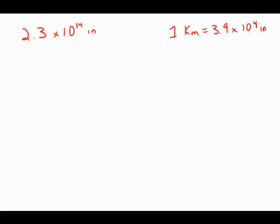The average distance between the Sun and a certain planet is approximately 2.3 times 10 to the 14th inches. Which of the following is closest to the average distance between the Sun and the planet in kilometers? And they give us the conversion, how many kilometers and how many inches.